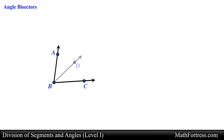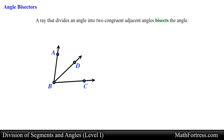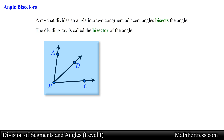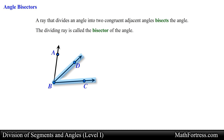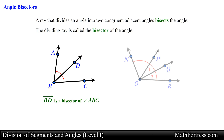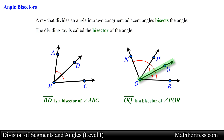Now let's talk about angle bisectors. An angle, like a segment, can be bisected. A ray that divides an angle into two congruent adjacent angles bisects the angle, and that ray is called the bisector of the angle. In the following figure, the measure of angle ABD is equal to the measure of angle DBC — angle ABD is congruent to angle DBC — so we can conclude that ray BD is the bisector of angle ABC. As an additional example, if angle NOP is congruent to angle POR and ray OQ bisects angle POR, then ray OP is the bisector of angle NOR, and angle 1 is congruent to angle 2.